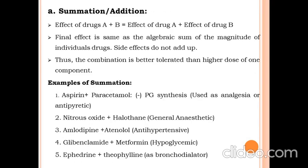Under synergistic effect, the first type is summation or addition effect. The effect of drug A plus drug B equals the effect of drug A plus the effect of drug B individually. For example, if the effect of drug A is 20 and drug B is 20, then 20 + 20 = 40, which equals 40. The final summation effect is always equal to the algebraic sum of the magnitude of individual drugs. Importantly, side effects do not add up.